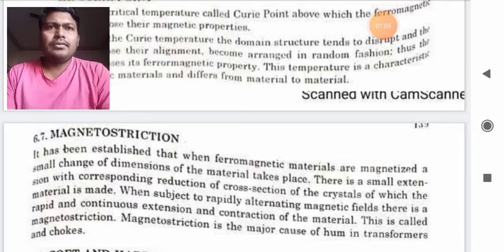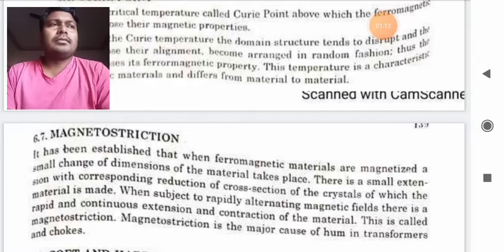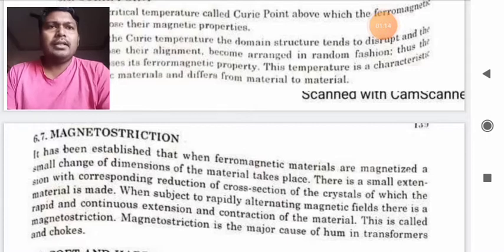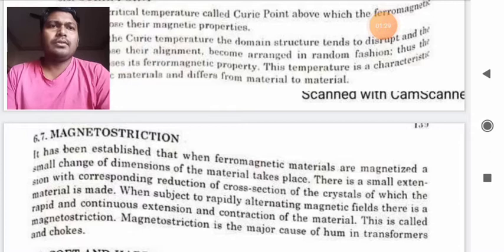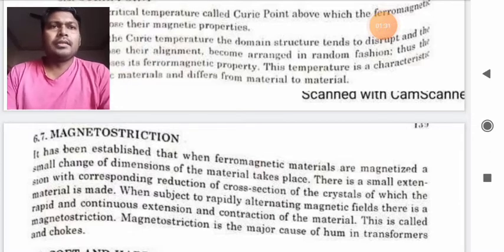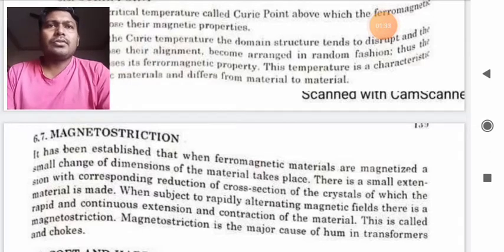Every ferrous or ferromagnetic material tends to expand and it also tends to contract and it depends upon its temperature. So this phenomena goes on throughout the material with respect to temperature. It goes on contracting and expanding. So this is called magnetostriction.